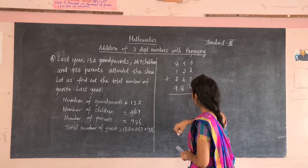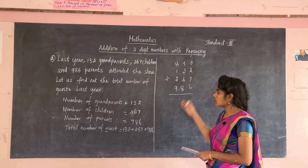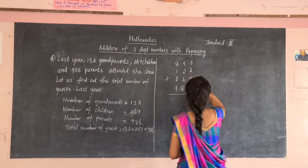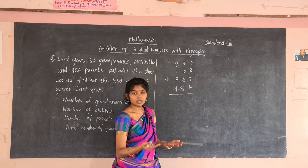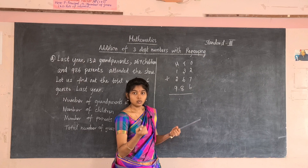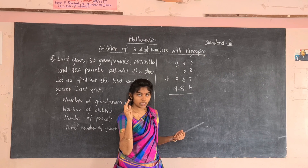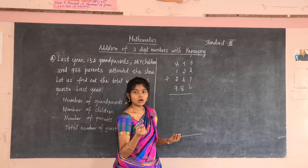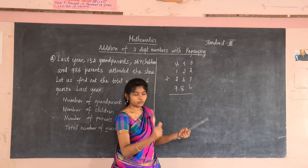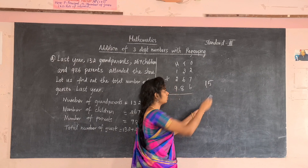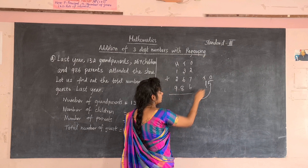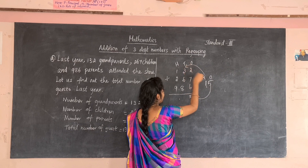Now add the ones place of all three numbers. Keep two in your mind, take seven in the fingers: say after two — three, four, five, six, seven, eight, nine. Nine is now in your mind; keep nine and take six in the fingers: after nine — ten, eleven, twelve, thirteen, fourteen, fifteen. Write 15 outside because it is a two-digit number. Write five in the ones place and carry one to the tens place.